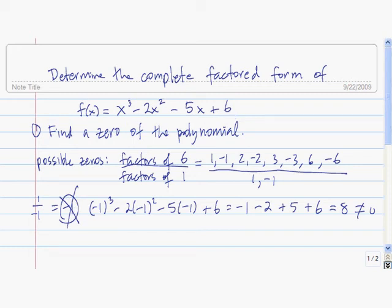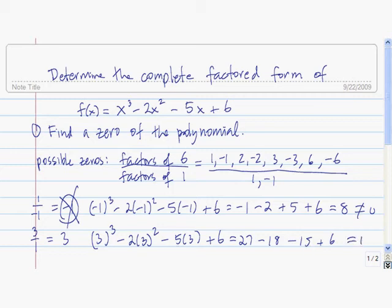Now we have to try another one. Let's try 3 divided by 1. 3 divided by 1 is 3. So now we plug 3 into the polynomial and see if we get zero. We get 3 cubed, which is 27. 3 squared is 9, times negative 2 is negative 18. 5 times 3 is 15, so we get minus 15, plus 6. So 27 and 6, that's 33. Minus 18 minus 15 is minus 33, and that's equal to zero. So that means that 3 is a zero of the polynomial.